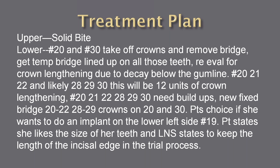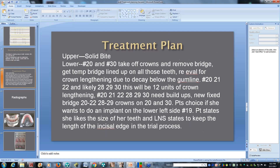Now I'm developing the treatment plan. For the lower, we'll take the crowns and fixed bridge off. We'll need a diagnostic wax-up to set up the correct bite, because the lower bite doesn't necessarily match the upper. Then 12 units of crown and bridge on the lower, and 12 units of crown lengthening. I treatment plan crown lengthening by time — each unit is 10 minutes, so 12 units means a two-hour surgical procedure. I also consider an implant at number 19.